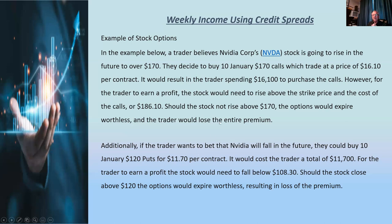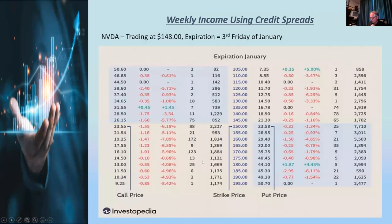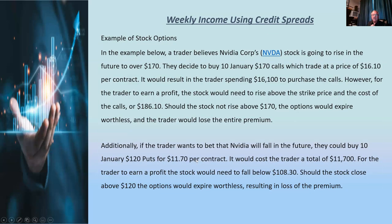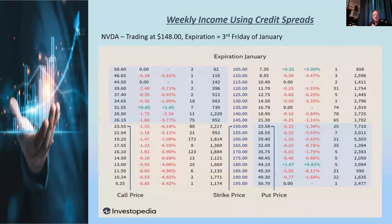Everything discussed so far is the typical way most people think about options: calls if you think it's going up, puts if you think it's going down, paying a premium for the right to participate. In the call case, with the stock at 170 and you paying $16 for the option, it needs to reach $186 to break even. For puts, you need the stock to fall to $109 to make money.